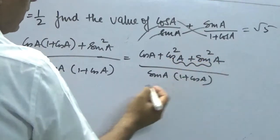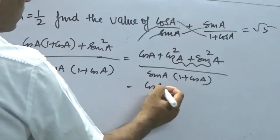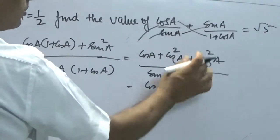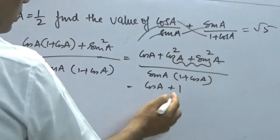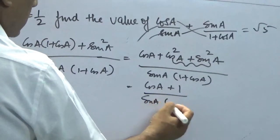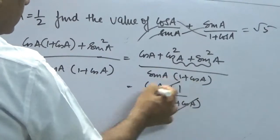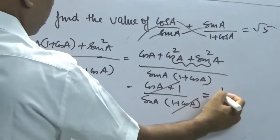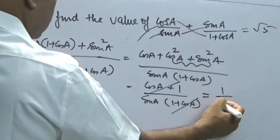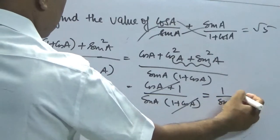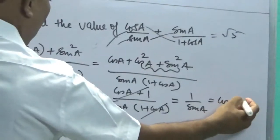Plus cos A. Now we have an identity which is sin²A + cos²A is always 1. And here we have sin A and 1 + cos A. Now this gets cancelled. We will be left with 1/sin A, which is nothing but cosec A.